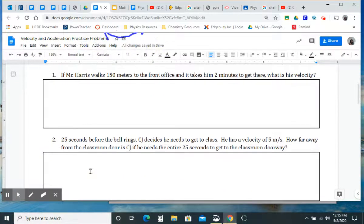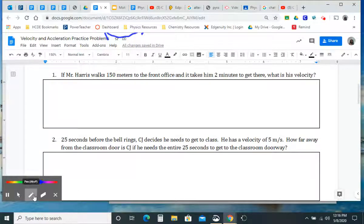So hopefully that is clear for you there. What we are going to do next is walk through some of these problems as examples. This first one says: If Mr. Harris walks 150 meters to the front office and it takes him two minutes to get there, what is his velocity? So first of all, if I know I'm looking for velocity, that's what I'm going to try to find. And my equation for velocity, we just wrote it down, was V equals change in position divided by change in time.